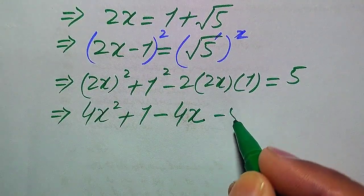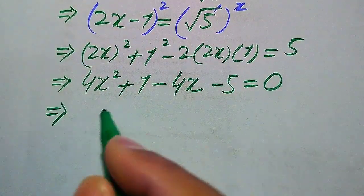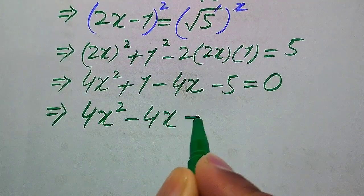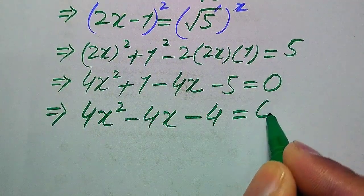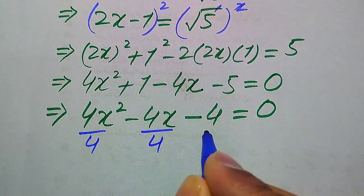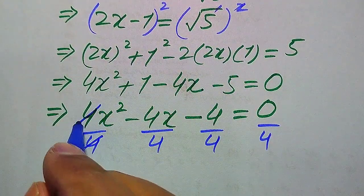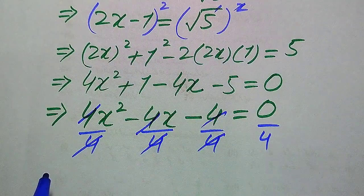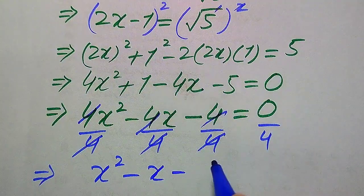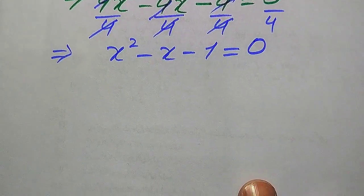Moving 5 from the right-hand side to the left gives 4x² minus 4x plus 1 minus 5 equals 0, which simplifies to 4x² minus 4x minus 4 equals 0. We divide each term by 4 — the 4s cancel — and we get x² minus x minus 1 equals 0.